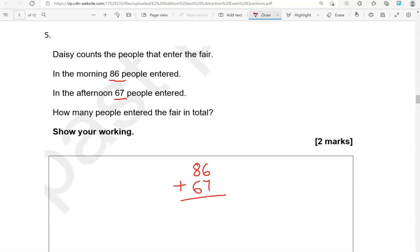6 and 7, that is 13, so 3 down and 1 carried over. 8 and 6, that is 14, and the one we carried over, that is 15. So 153.